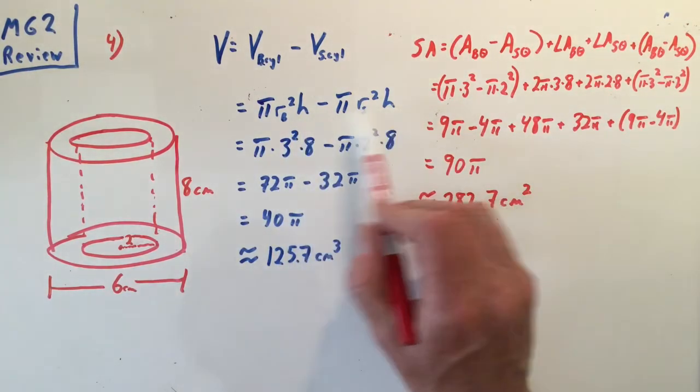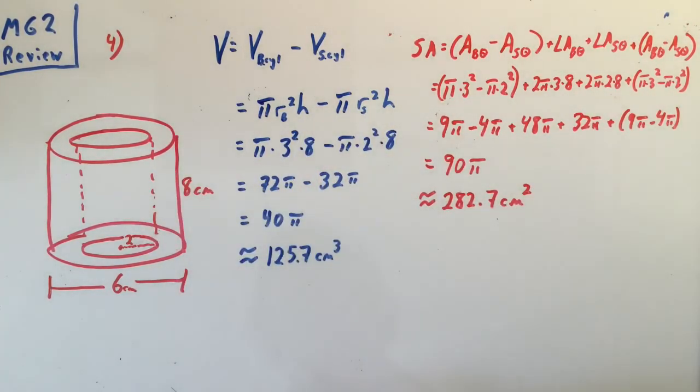But I'll let h be the same because the height of the big cylinder and the height of the small cylinder are the same. And you just plug in your numbers, you get 40π exactly, which is approximately 125.7 cubic centimeters.